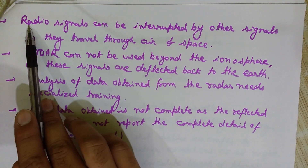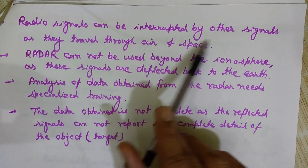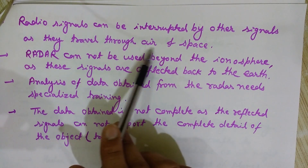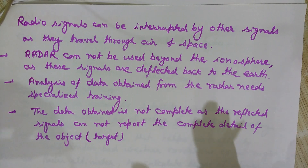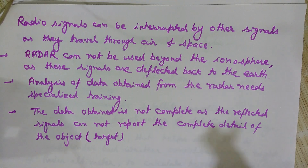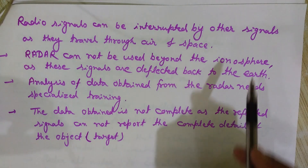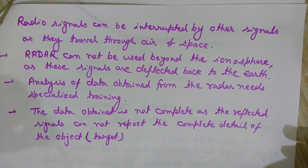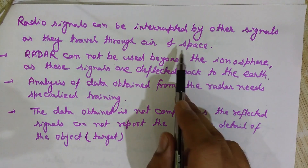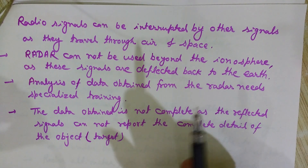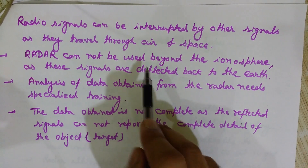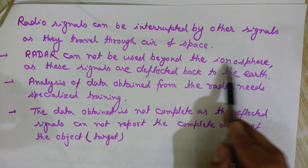Radio signals can be interrupted by other signals as they travel through air and space. Since radar transmits radio signals wirelessly, there are many chances of interference from other radio signals or electromagnetic waves. This interruption or interference problem is a notable limitation of radar.